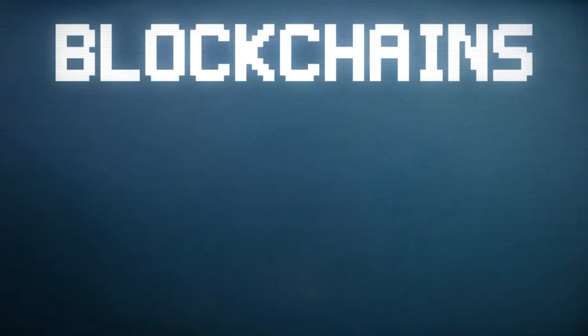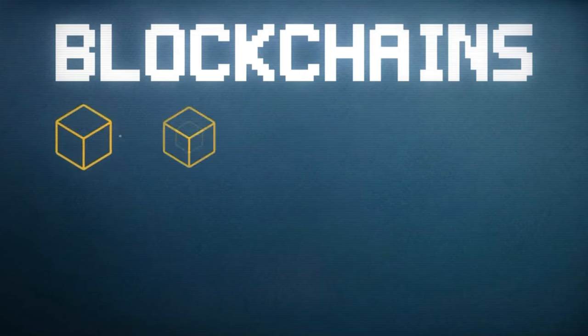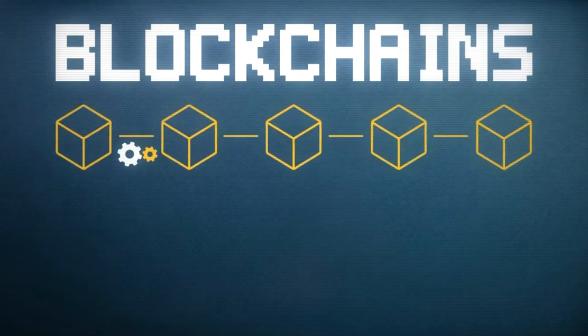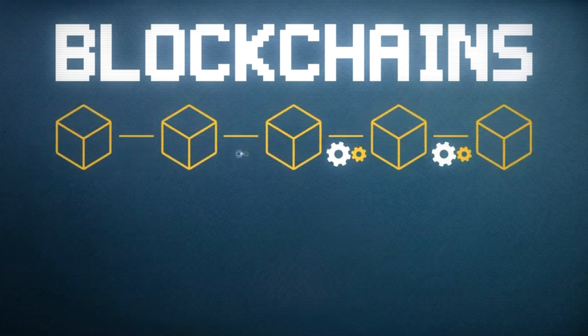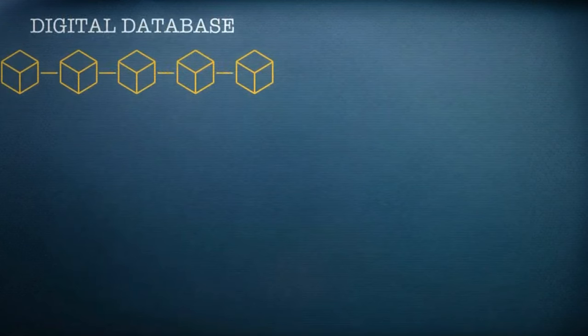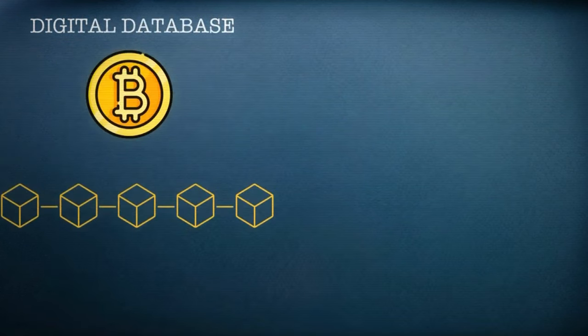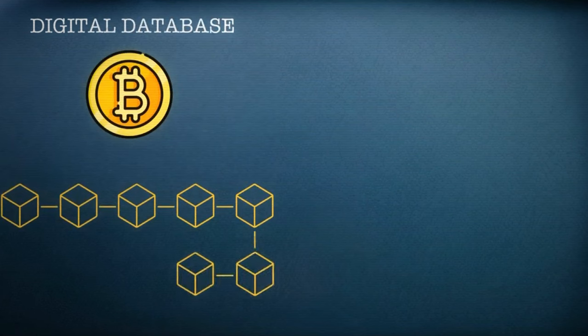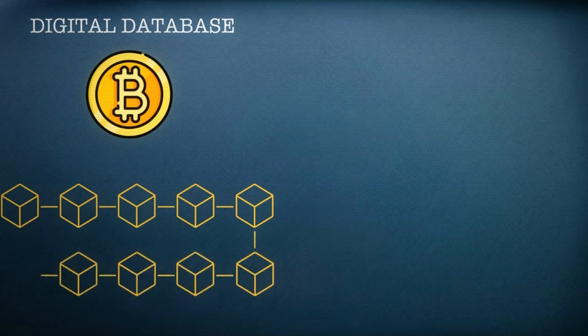This is why blockchain networks may form the foundation for the next generation of the internet. In this Cointelegraph video, we're going to use animations to simply explain how blockchains work, and why this technology is so exciting. To cut a long story short, a blockchain is a digital database. Bitcoin uses its blockchain to keep a record of every transaction that's ever been made, dating all the way back to when the cryptocurrency first launched on January 3rd, 2009.